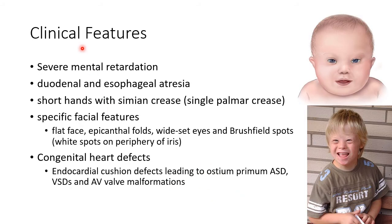Now let us see about the clinical features of Down syndrome. There will be severe mental retardation, duodenal and esophageal atresia. The patients will have short hands with a single palmar crease. Specific facial features like flat face, epicanthal folds, wide-set eyes, and Brushfield spots — which are white spots on the periphery of the iris — can be seen.